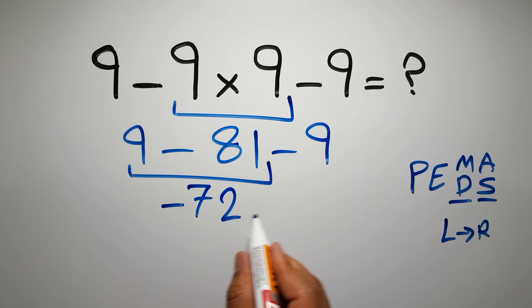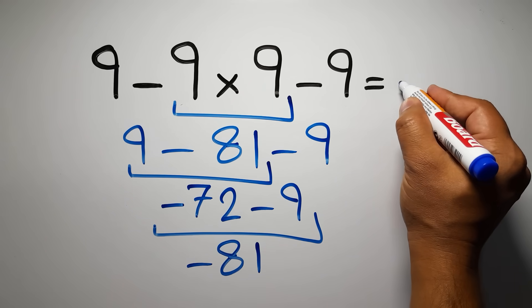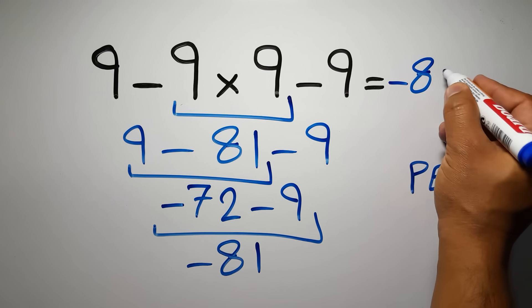So negative 72 minus 9, which gives us negative 81. And this is our final answer to this problem. The correct answer is negative 81.